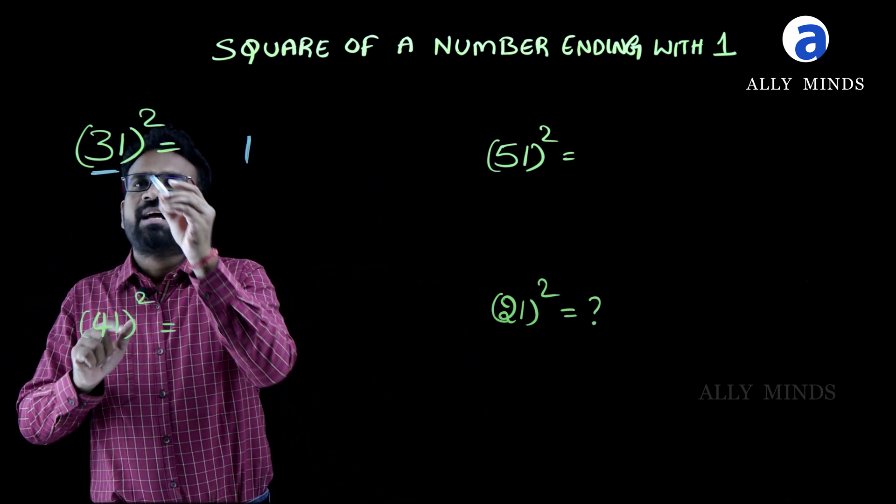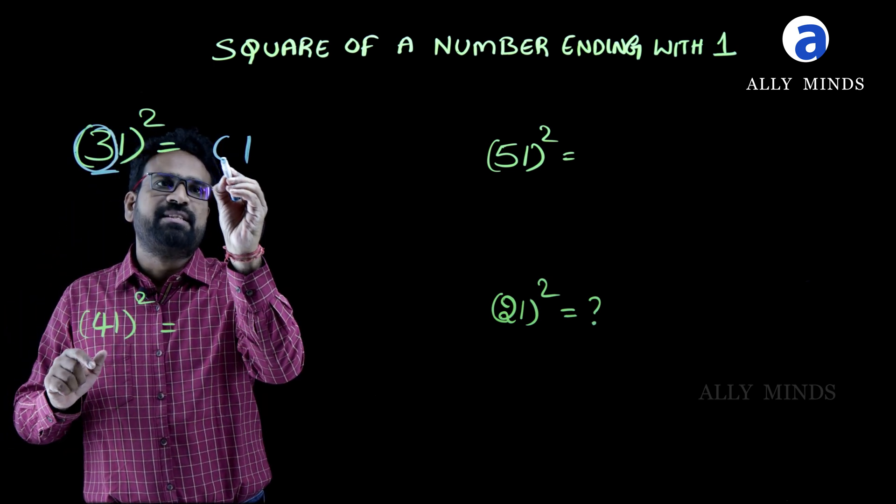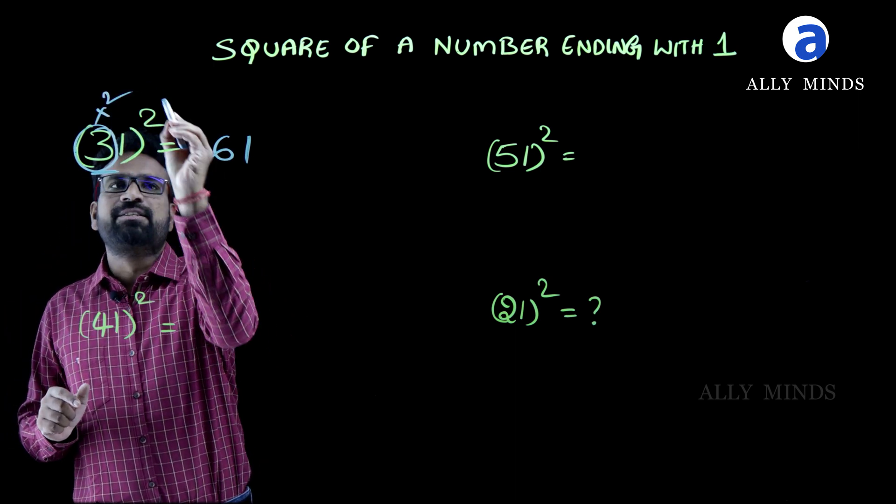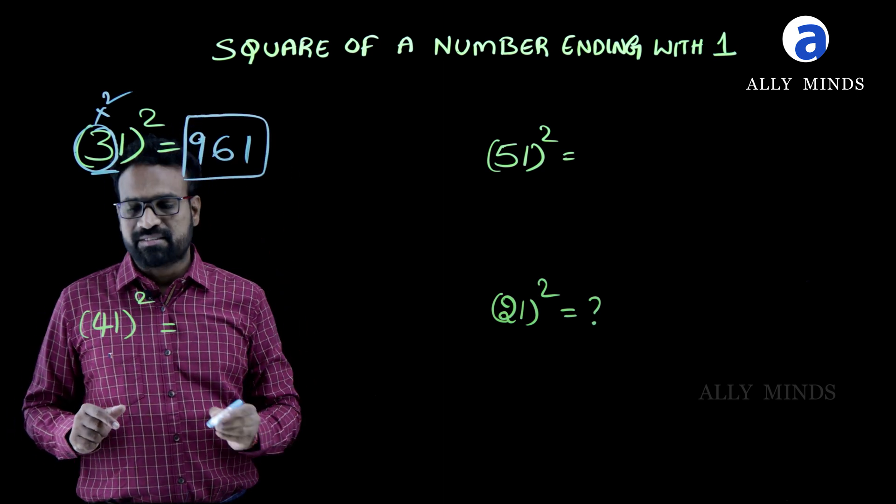write that one as it is and first double this number, it is 6 and square it, 3 square is 9. So, 961 is the answer.